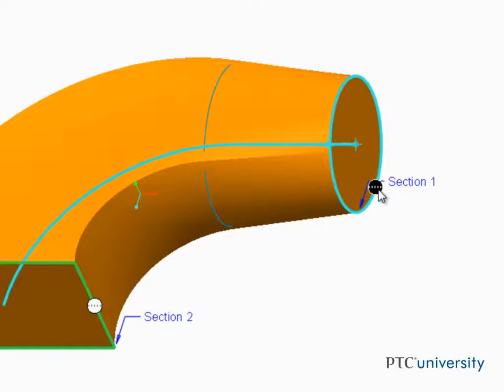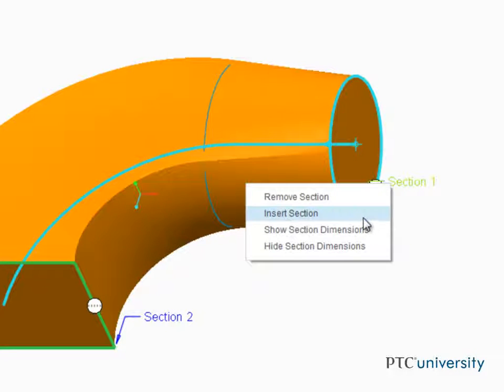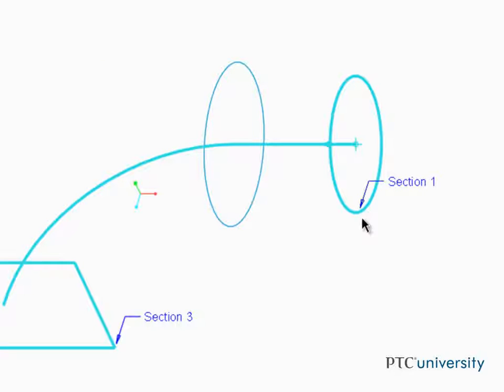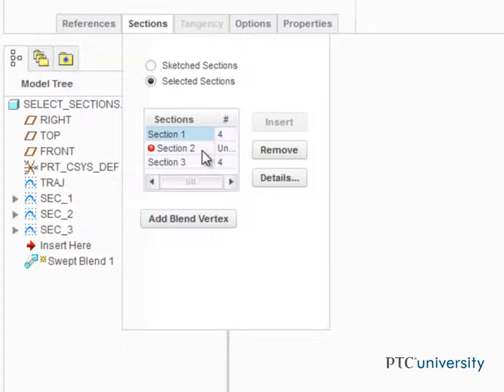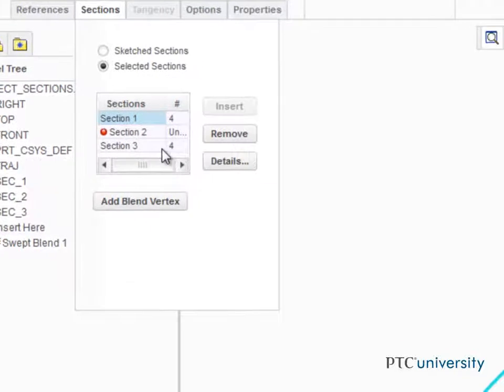Now, in the graphics area, right-click on the section 1 tag and select insert section from the pop-up menu. Notice over here in the sections tab that the rectangular section is automatically moved down the list to become section 3, to make room for the new section that we're about to select.